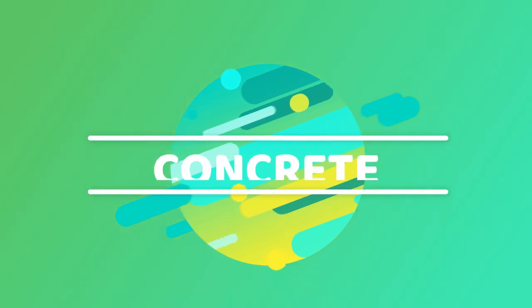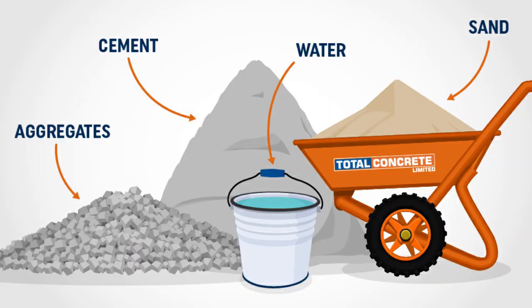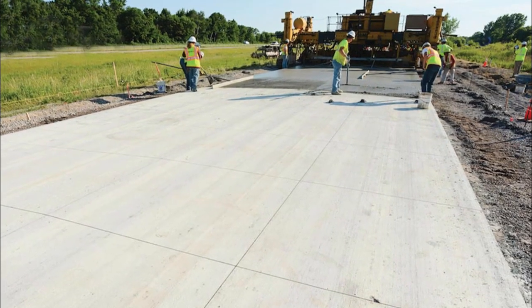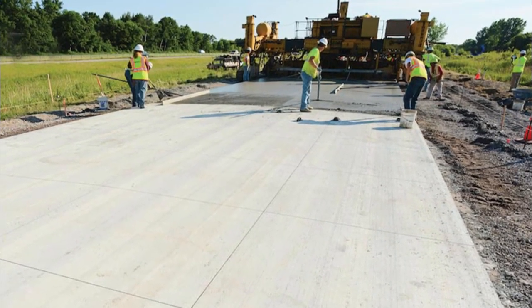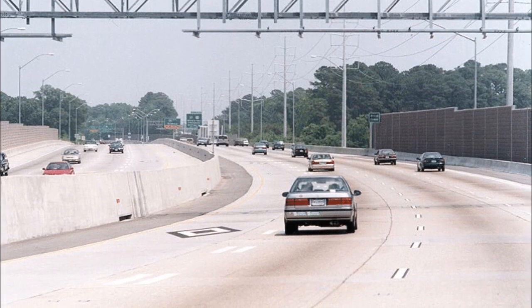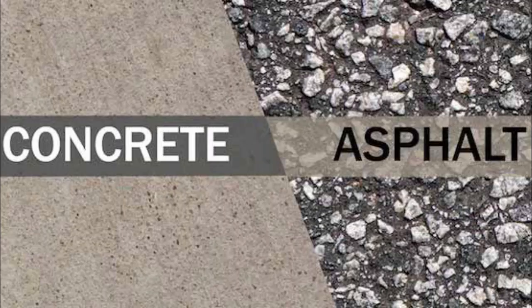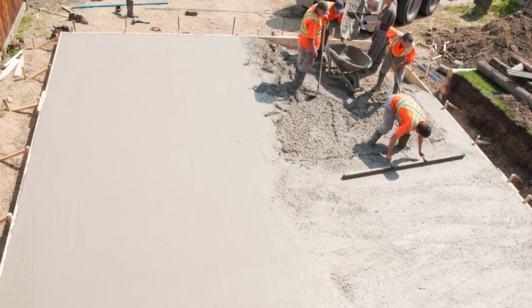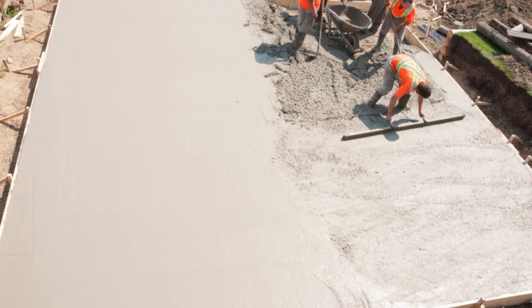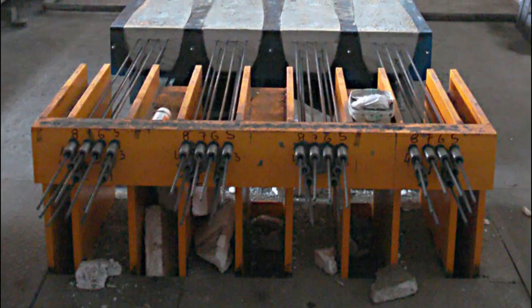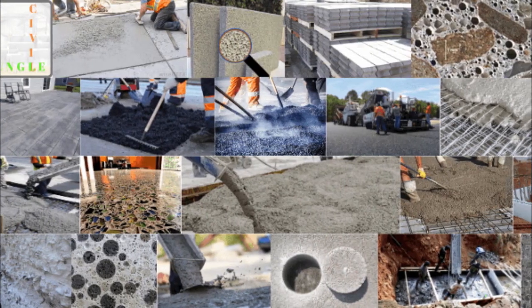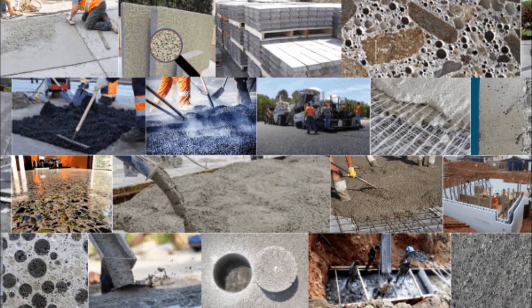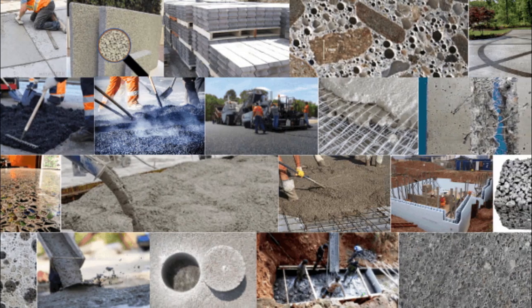Another popular material used in road construction is concrete. Concrete is made from a mixture of cement, water, and aggregate, typically crushed rock or gravel. It is a durable and long-lasting material, which makes it a great choice for roads that will see heavy traffic and need to withstand the test of time. However, it is a more expensive option than asphalt and can take longer to install. There are different types of concrete, such as plain concrete, reinforced concrete, and pre-stressed concrete, each with its own unique properties suitable for specific road construction projects.